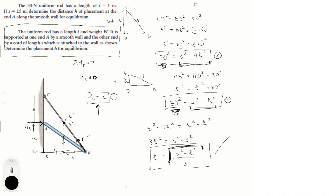To finish the first part, we're given L equals 1 and S equals 1.5. Plugging into our equation: H equals the square root of (1.5² − 1²) divided by 3. Calculating this gives H equal to 0.6455 meters. This is the final answer for h for equilibrium when L equals 1 meter and S equals 1.5 meters.